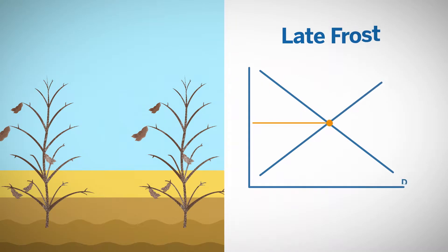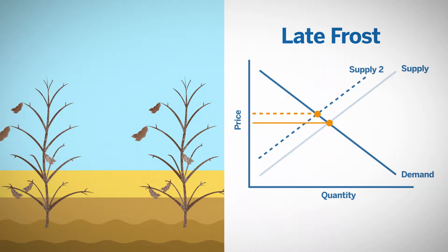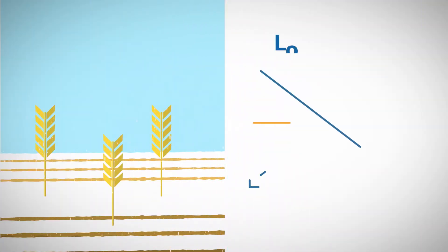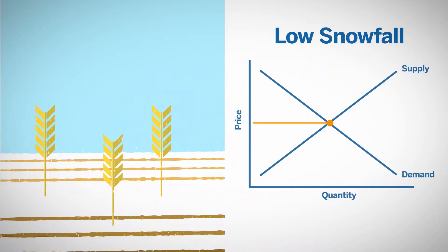A late spring frost arriving as young seedlings begin to appear could damage crops, affect quality, and decrease yield and the supply of grain available. In some cases, such as with winter wheat, too little snowfall means that it will not receive the insulation needed to protect it from outbreaks of severe winter cold.